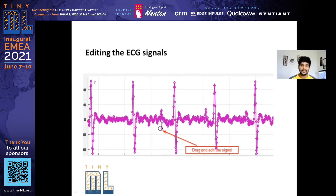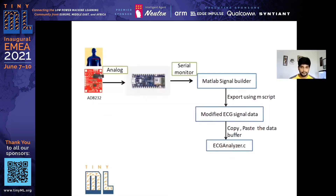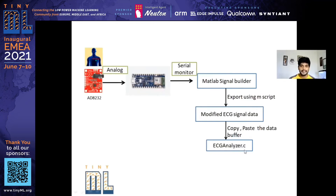I edited my normal ECG data to look like atrial fibrillation cases and also first degree heart block, which is the AV block one case — I could drag and modify the waveform to resemble the other two cases. Once that modification was done, I exported the data into a data buffer so I could use it in my code, storing it in an ECG analyzer .C file I created for the project.